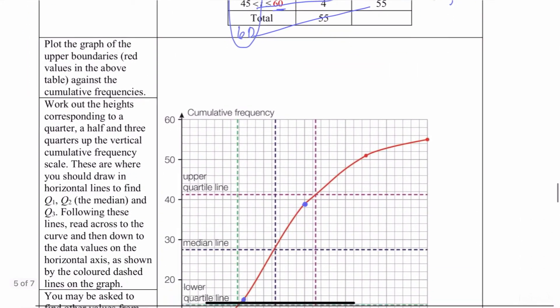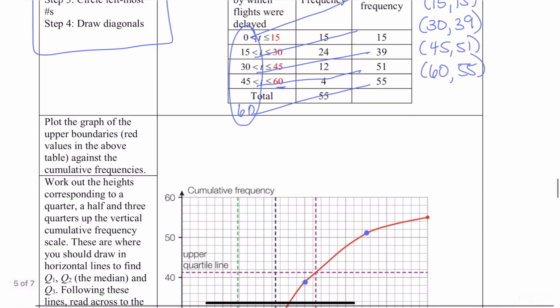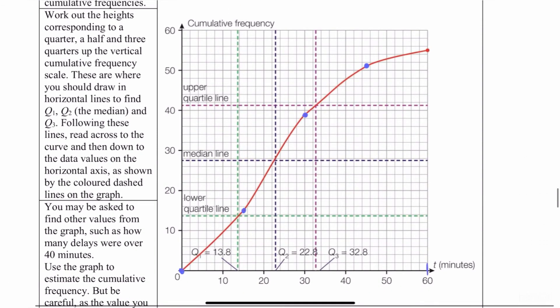Then we need the point 45, 51. So we go to 45 and 51, which is right here. And the last point is the point 60, 55. So you find 60 on the x-axis, and then you go up until you get to 55, which is right there. Again, I'm going to erase that line because I don't need it. And I put a point.